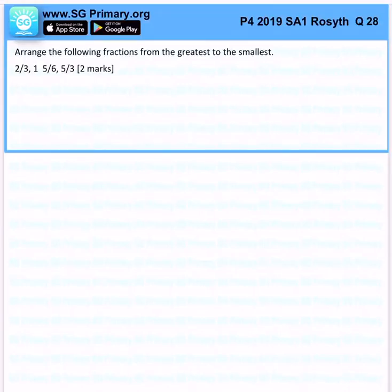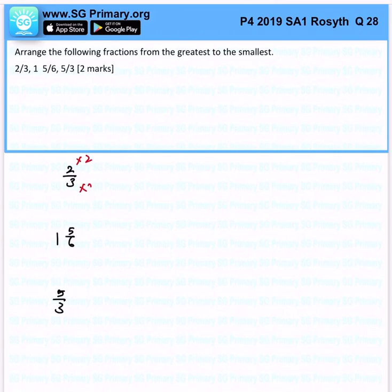Arrange the following fractions from the greatest to the smallest. What I want to do is to ensure that I can easily compare them. So therefore, I want to change this fraction to 4 over 6, this to 11 over 6, and this to 10 over 6.